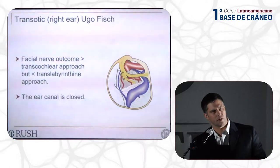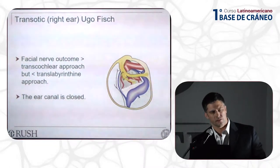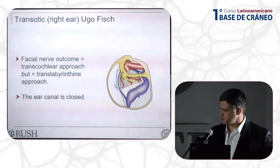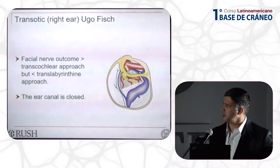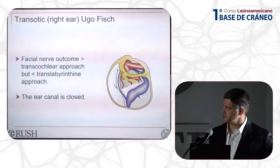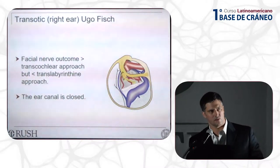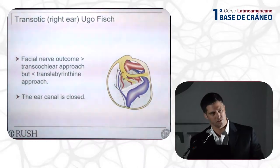The trans-otic approach was developed by Ugo Fish, originally intended for small to medium-sized tumors less than 2.5 centimeters. The difference between this and the trans-lab approach is that the ear canal is removed, and the inner ear and labyrinth are removed. The ear canal is closed, the facial nerve is skeletonized in the mastoid segment, but the facial nerve is not rerouted — you follow it into the internal auditory canal. I find this approach most useful when you have lesions involving both the inner ear and the cerebellopontine angle or internal auditory canal.